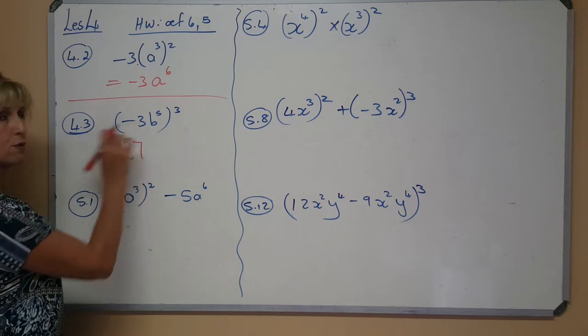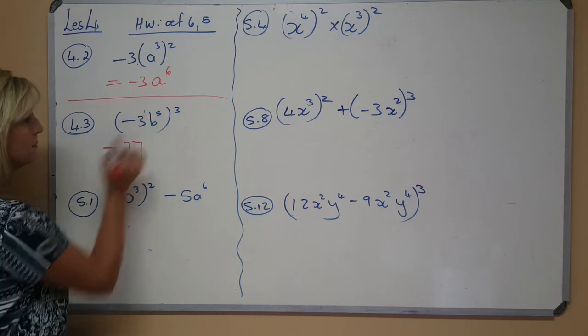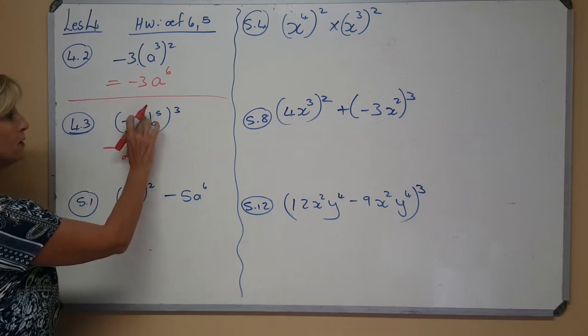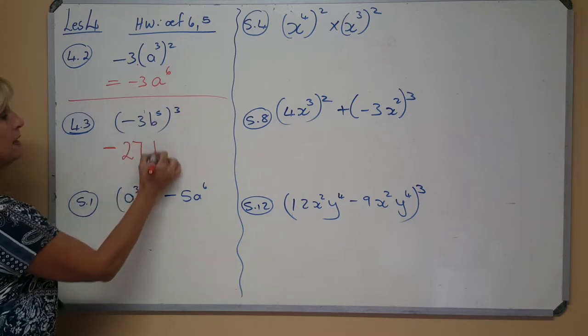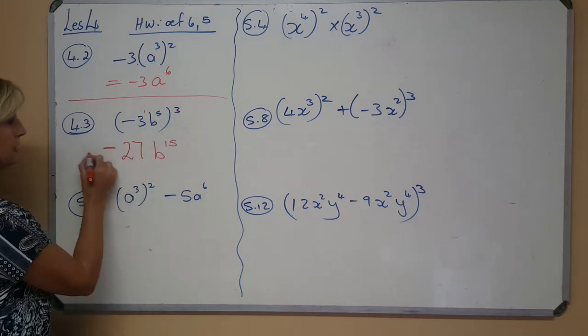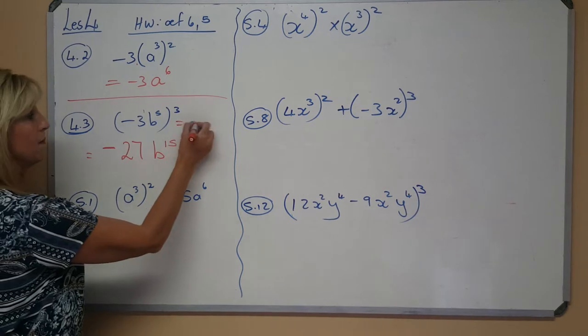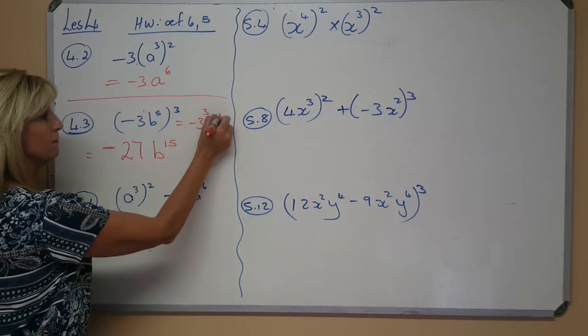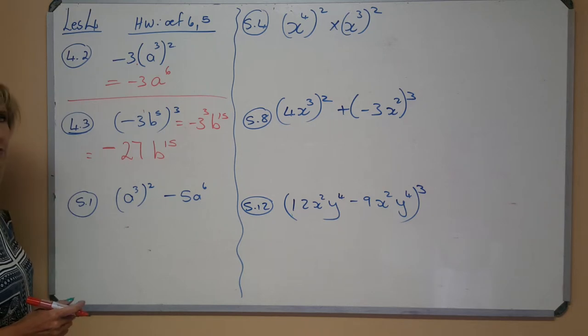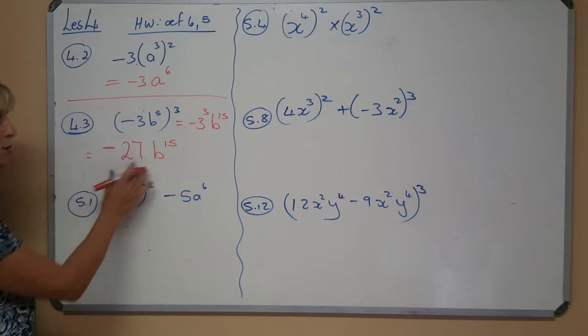If you first want to write 3 to the 3, that's fine, because remember the exponent there, the ninja 1, is equal to 1 there. 1 times 3 is 3. And then b to the power, again multiply your exponents, is 15.